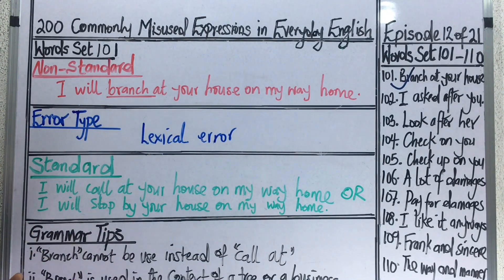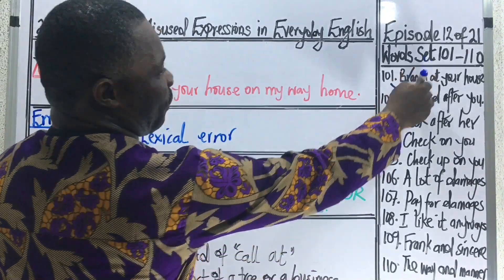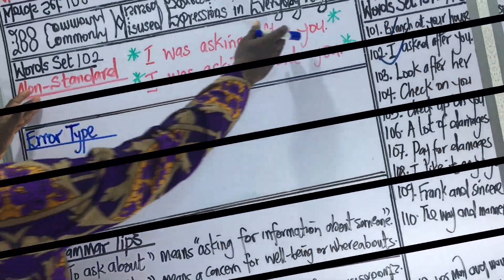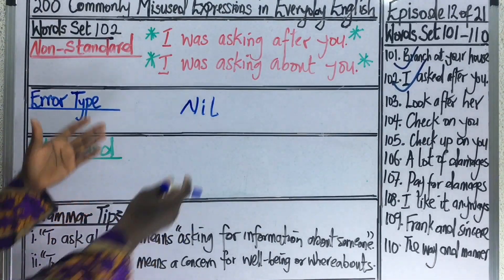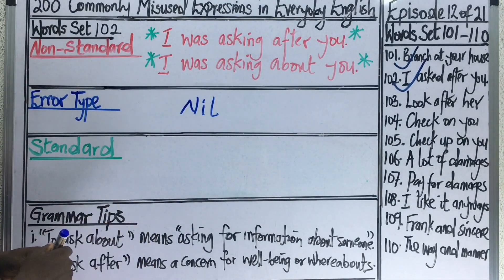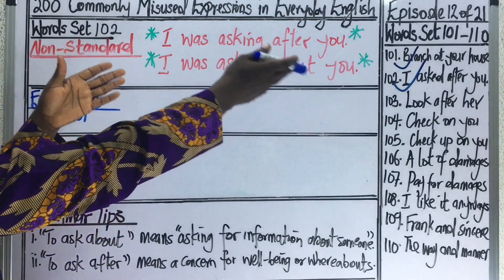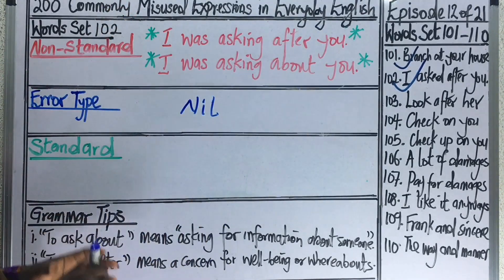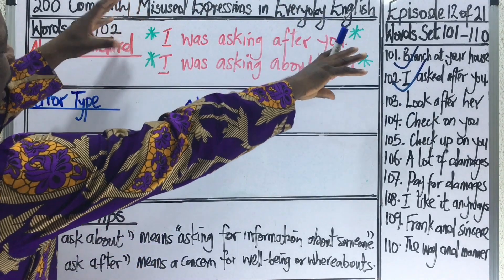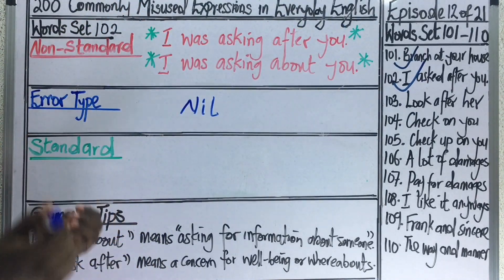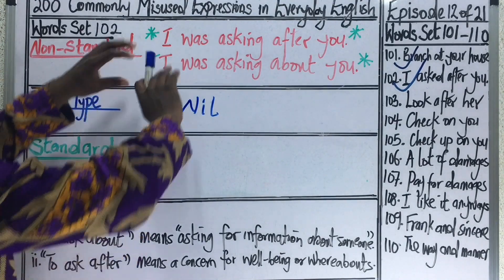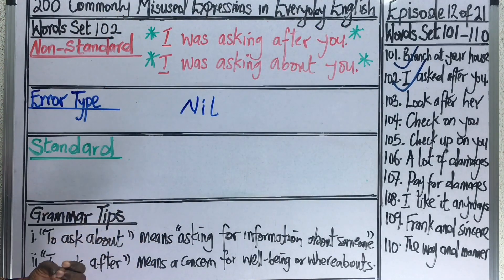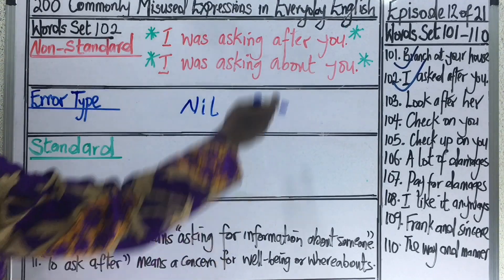We move forward to our next set of words, which includes 'I ask after you.' Under word set 102, we have two expressions to consider. The first is: I was asking after you. The second is: I was asking about you. Both expressions are marked with a green asterisk, indicating that both are grammatically correct and usable in everyday English.